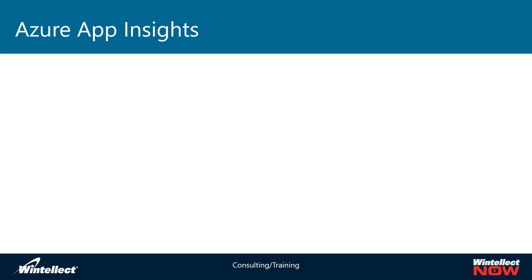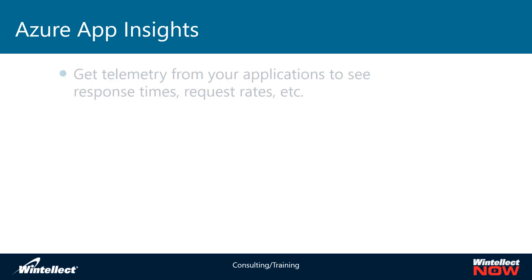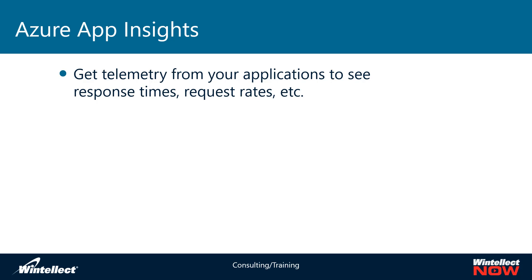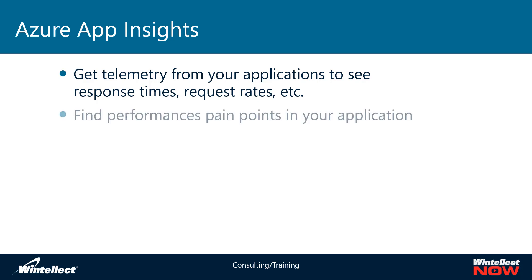Azure App Insights is your performance monitoring tool for applications running on Azure, or on a server, or even a browser. With App Insights, you can get telemetry out of your application to see how things are performing. You can see things like response times or request rates, which gives you an idea of how things are actually being used and how long it's taking to get data out of your application.